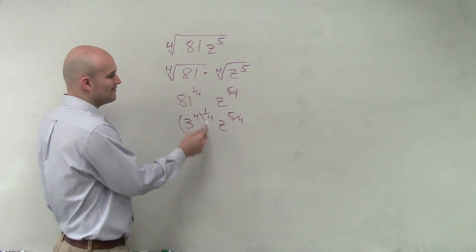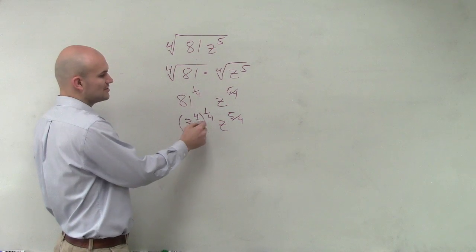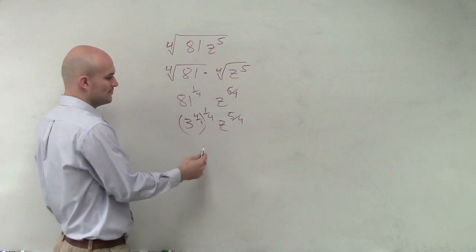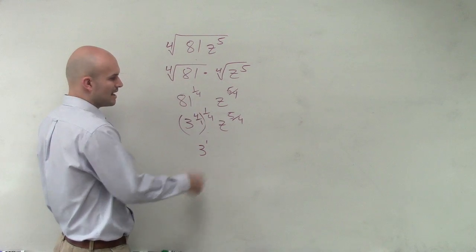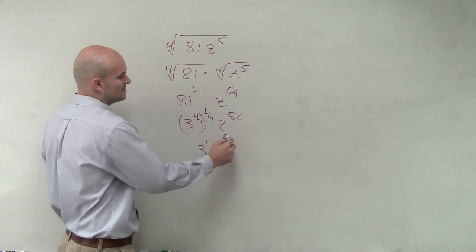then you have the power to power rule, which tells you to multiply across, which gives you 3 to the first power times z to the 5 over 4.